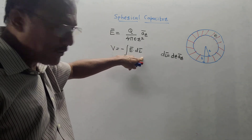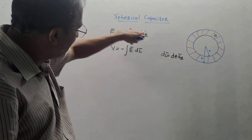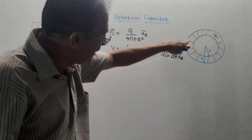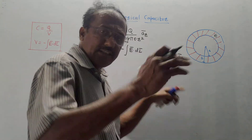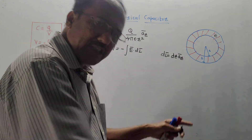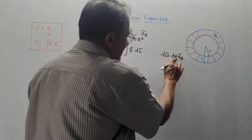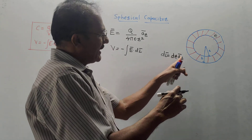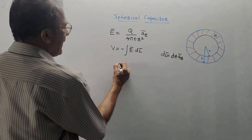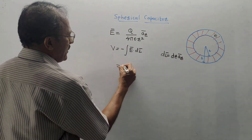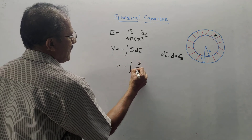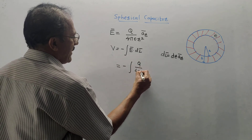Since the direction of E-bar is â_r, the direction of dl-bar must also be â_r. The component related to radius r is dr, so the equation is dl-bar = dr â_r. Now substituting values, the integral becomes −∫ q/(4πε r²) dr â_r · â_r.